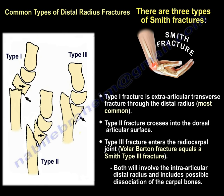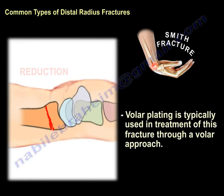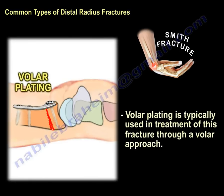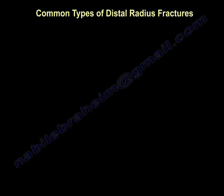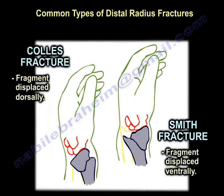Note the volar direction of the fragment. Volar approach, plating, and supporting this fragment is usually the treatment for this fracture. You can see the difference between Colles fracture and Smith fracture in the displacement: the Colles is dorsal, while the Smith is palmar or volar.